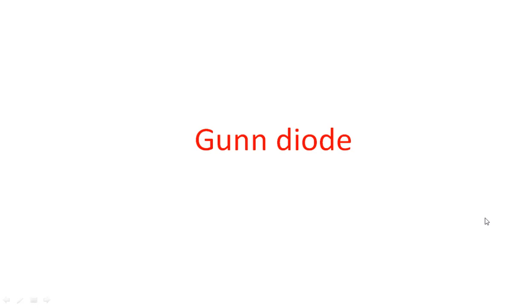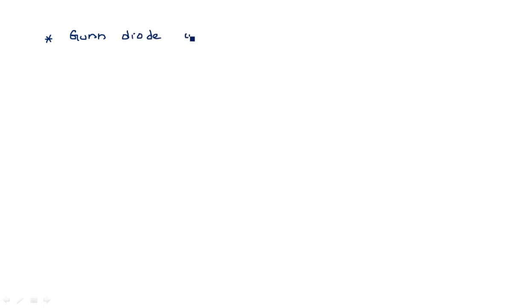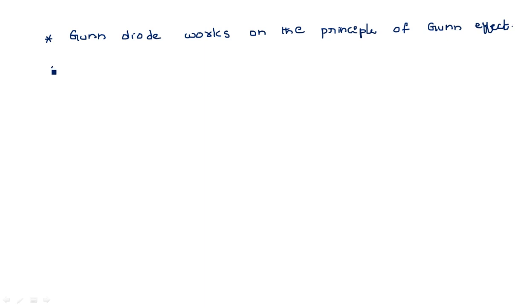Hi everyone. In this video I am going to explain the construction and working of the Gunn diode. In the last class I explained about the transferred electron device — an example of which is the Gunn diode. The Gunn diode works on the principle of the Gunn effect, also known as the RWH theory or two-valley theory.